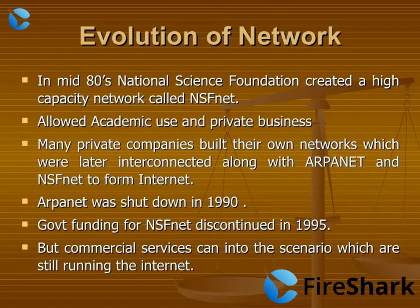Now we will know more about the evolution of networks and how we got into networking and the internet. In 1976, a research paper outlined the protocol to achieve end-to-end delivery of packets. This paper on Transmission Control Protocol, TCP, included concepts such as encapsulation, datagram, and the function of a gateway. Shortly thereafter, authorities made a decision to split TCP into two protocols — namely TCP and IP. We will get into more detail on this later.